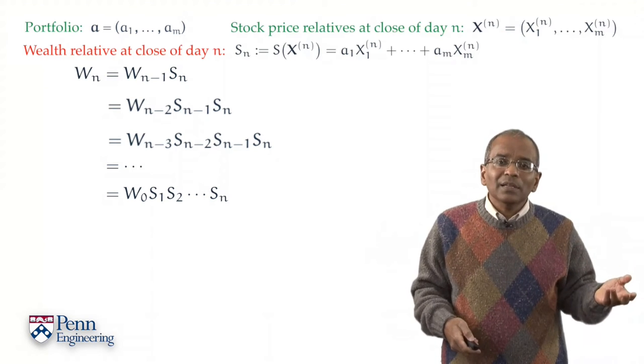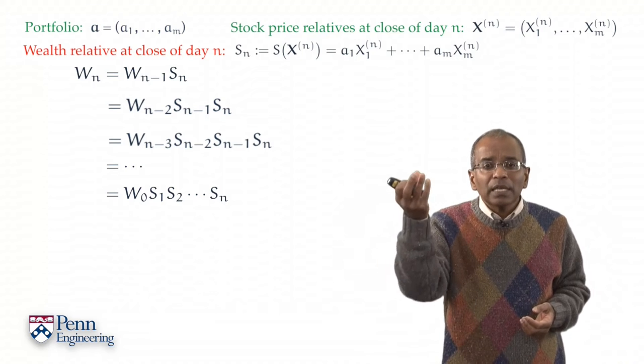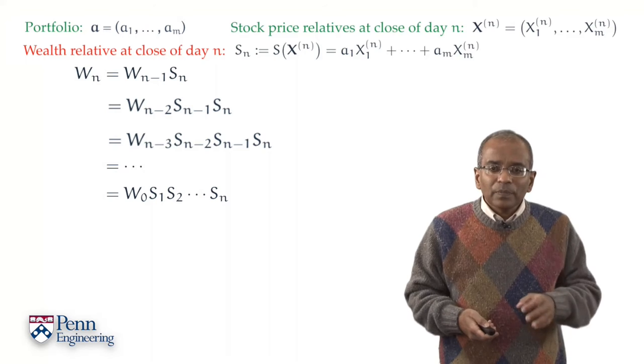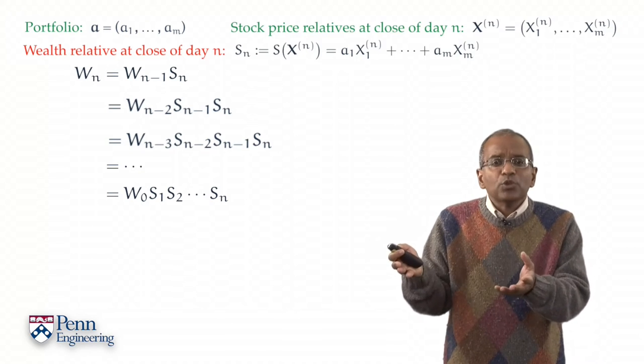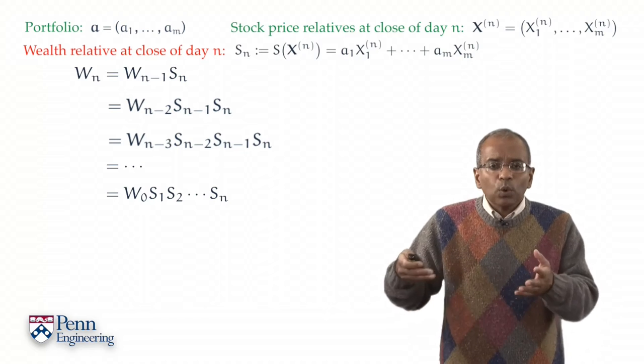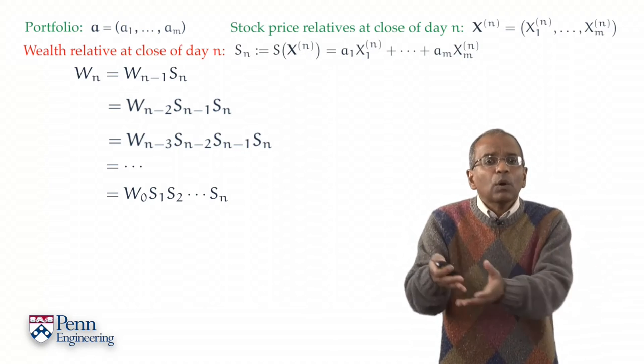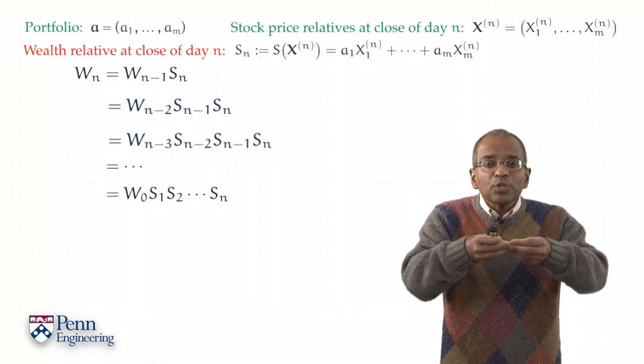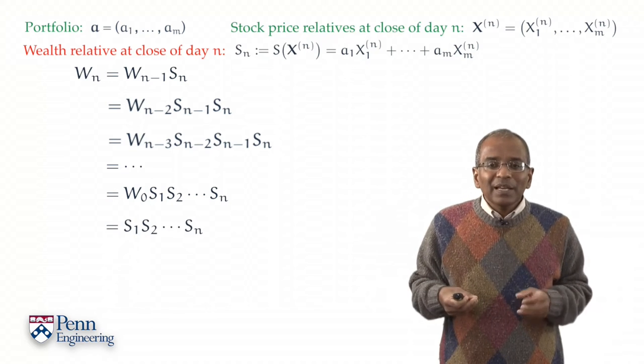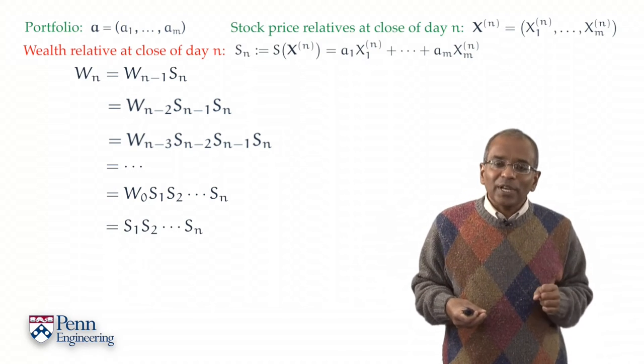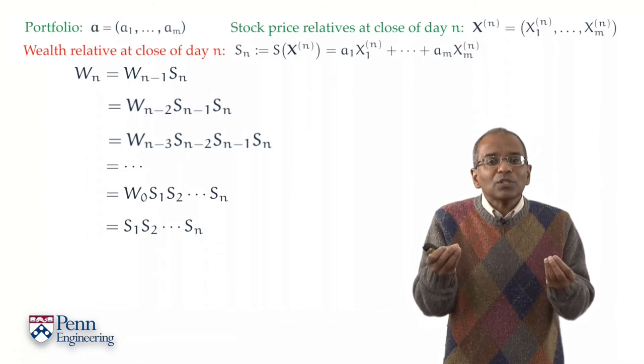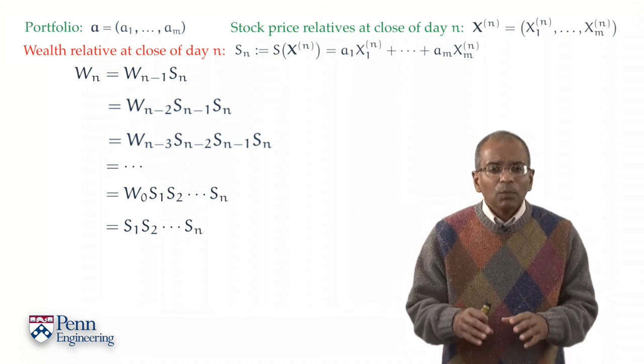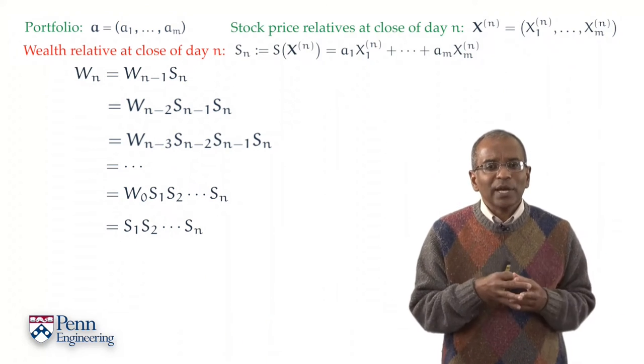The wealth at day n is given by the initial wealth times the individual wealth relatives for each day. For simplicity, let's assume we have an initial wealth W_0 of 1. So if our initial investment was one unit distributed according to our portfolio a, then after n days of trading our wealth would have become the product of the wealth relatives S_1, S_2, S_3 through S_n. One could hardly ask for a simpler expression on the right hand side.